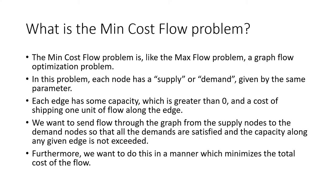So what is the min-cost flow problem? The min-cost flow problem is, like the max-flow problem, a graph flow optimization problem. Each node has a supply or demand given by the same parameter. Each edge has some capacity which is greater than zero, and the cost of shipping one unit of flow along the edge. We want to send flow through the graph from the supply nodes to the demand nodes so that all demands are satisfied and the capacity along any given edge is not exceeded, minimizing the total cost of flow. Note that we can say without loss of generality that all edges have capacities greater than zero, as any edge with capacity zero doesn't need to be displayed and will never be used.